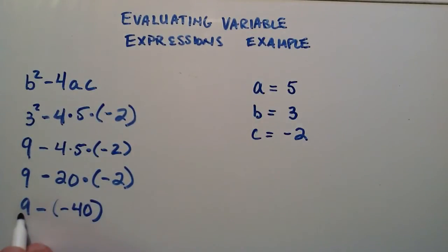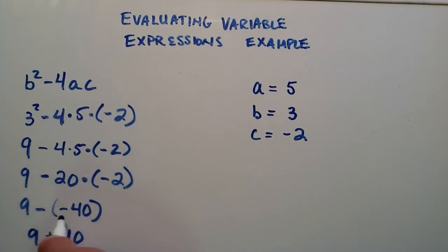So now we have some number and we're subtracting a negative number from it. Whenever we have a case like this we can simply take the first number and treat the second number as a positive and put a plus sign in between. So 9 minus negative 40 can be rewritten as 9 plus positive 40. So 9 plus 40 is simply equal to our answer which is 49.